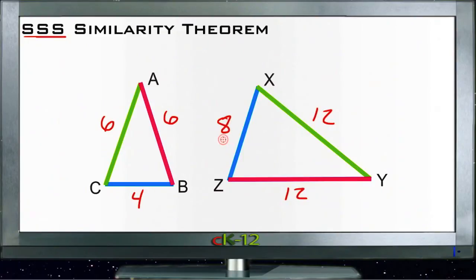Then we can tell—you can see that all the sides that match in color are in the same proportion to each other. This side XZ is twice as long as CB (the two blue ones here), and AB is half as long as ZY (the two pink ones), and then AC is half as long as XY (the two green ones).